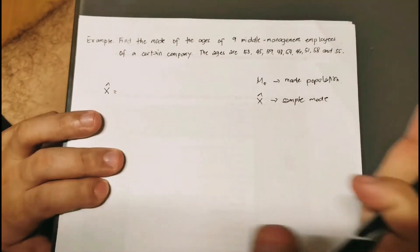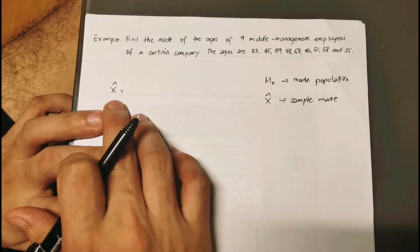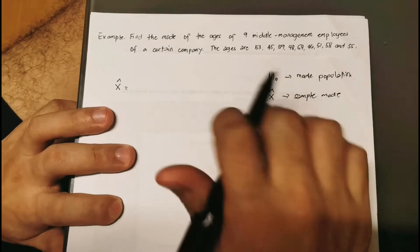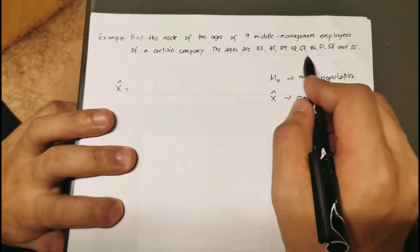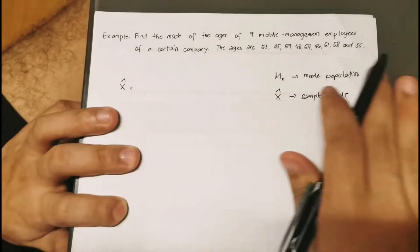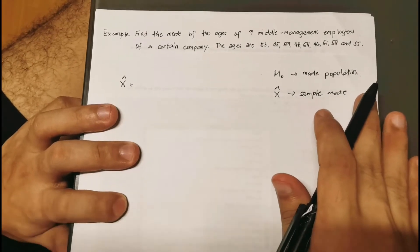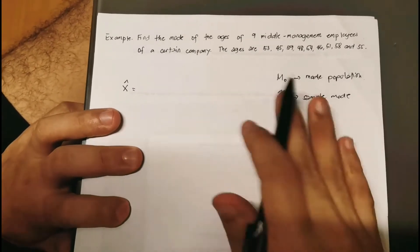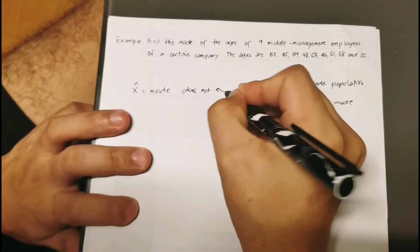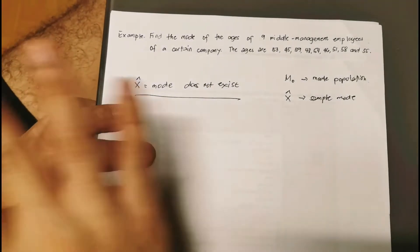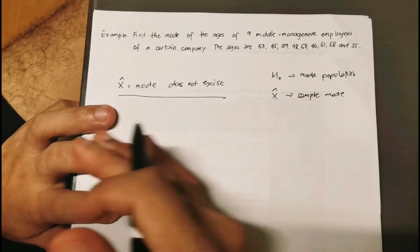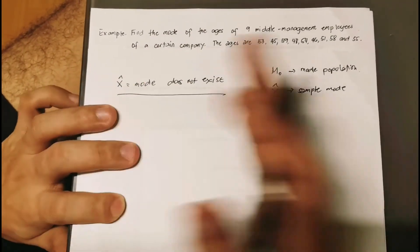There is no specific formula for finding the mode. As mentioned, the mode is simply identifying the most reoccurring value in a data set. Looking at the nine employee ages, there is no reoccurring age, so in this case we say the mode does not exist — there is no reoccurring value among the nine middle management employees.